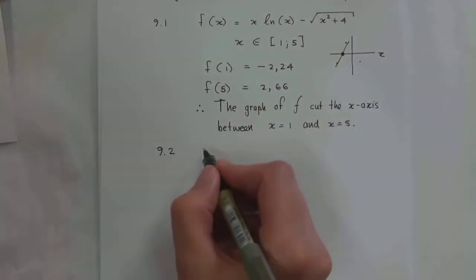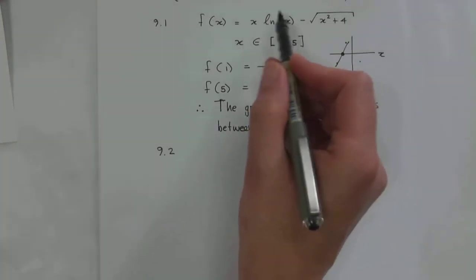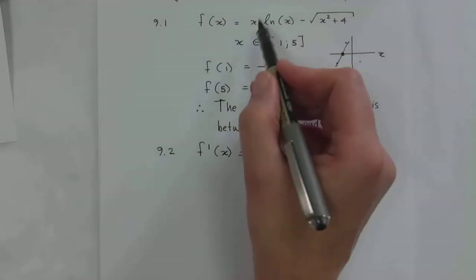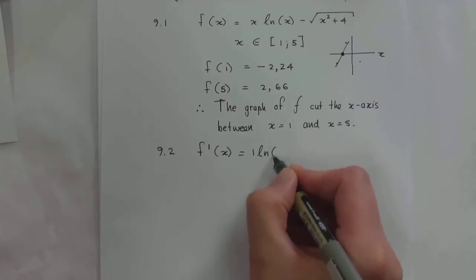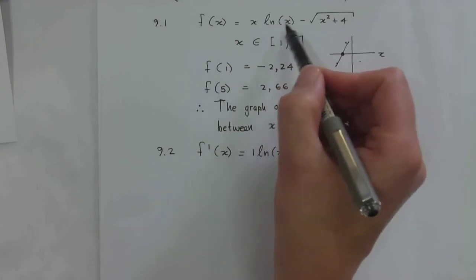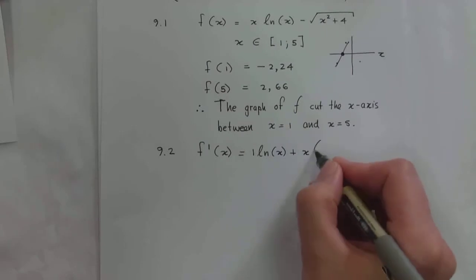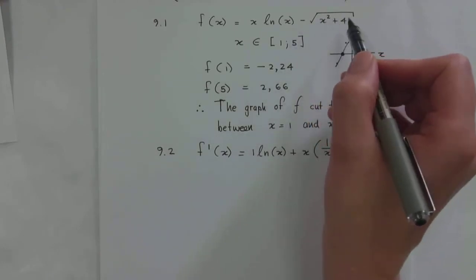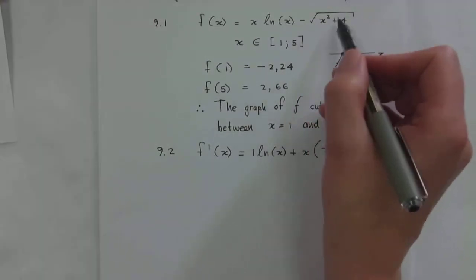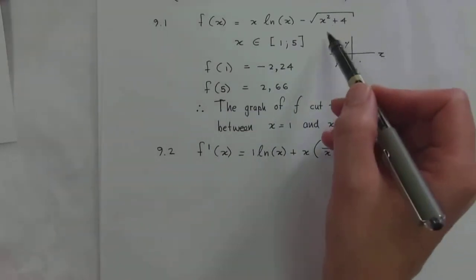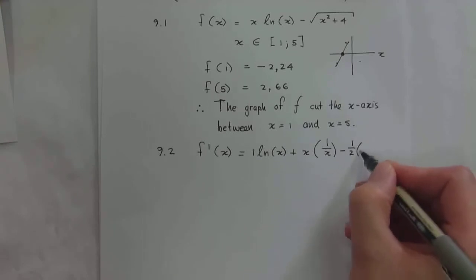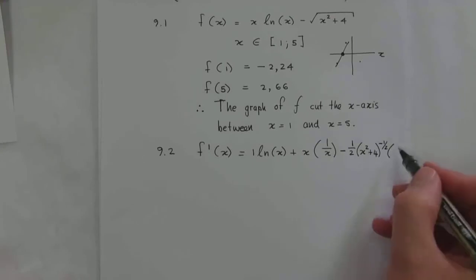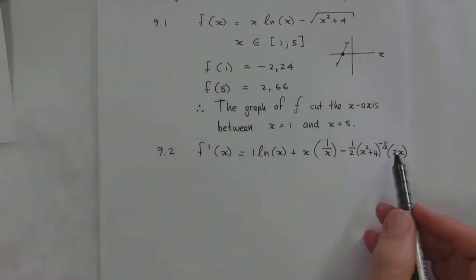The derivative is then going to be — watch out, this is a product rule. Product rule says the derivative of x is 1 times ln(x), plus x times the derivative of ln(x), which is 1/x. Then the second term minus the square root of x squared plus 4, which is to the power of a half — this is a chain rule, so I use the half times (x² + 4) to the power of negative a half, times the derivative of the inside function, which is 2x.